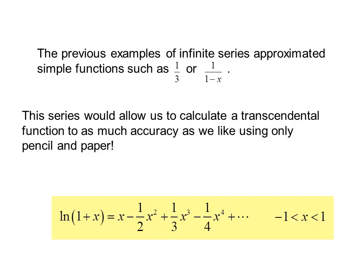The previous examples of infinite series approximated simple functions such as one-third or one over one minus x. This series would allow us to calculate a transcendental function to as much accuracy as we like using only pencil and paper: the natural log of one plus x equals x minus one-half x squared plus one-third x cubed minus one-fourth x to the fourth, when x is between negative one and one. You can imagine, before the invention of the computer or the calculator, this would have been extremely powerful.